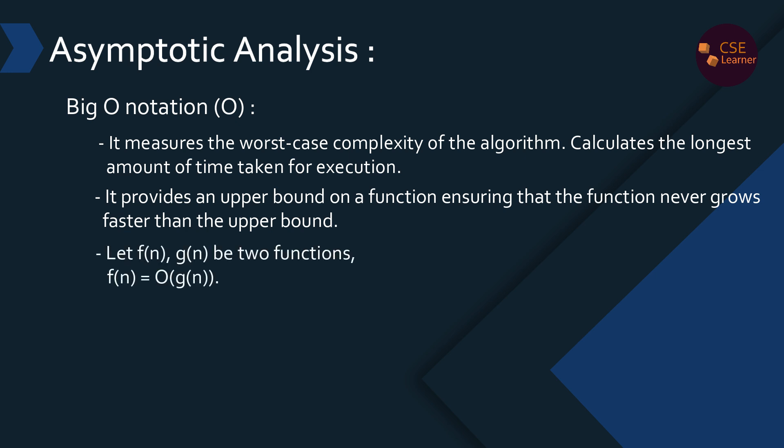If we have f(n) and g(n), these are two functions. f(n) is the actual running time function, and g(n) is the bounding function. If f(n) is Big O of g(n), then f(n) ≤ c·g(n) for all n ≥ n0, where c is a positive constant. g(n) serves as the upper bound.